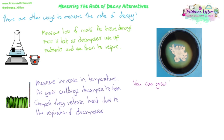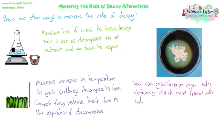You can also grow microorganisms like fungi on an agar plate that contains starch, which is a nutrient molecule they can break down. Stain the starch with iodine — it will go blue-black. As the fungi grow, they secrete amylase enzymes to break down the starch so they can absorb it. This leaves a clear ring around the fungi. You can measure the diameter of that clear area in a set amount of time, and that gives you the rate of decay.